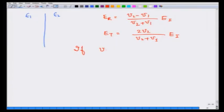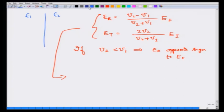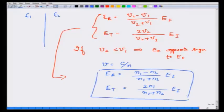Notice that if V2 is less than V1, this implies E reflected has the opposite sign to E incident — that means it flips direction, or there is a pi phase change. Let us translate these equations into terms of the refractive index. Since V equals c over n, E reflected is (N1 minus N2) over (N1 plus N2) times E incident, and E transmitted is 2 N1 over (N1 plus N2) times E incident. You notice that if N2 is larger than N1, the reflected wave has a phase change — something taught in grades 11 and 12, but now we see it arises from boundary conditions on the electric and magnetic fields.